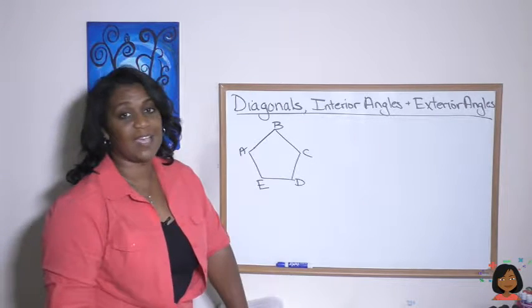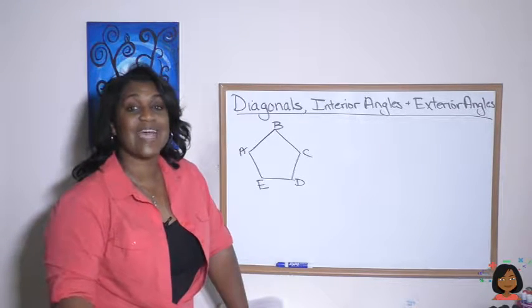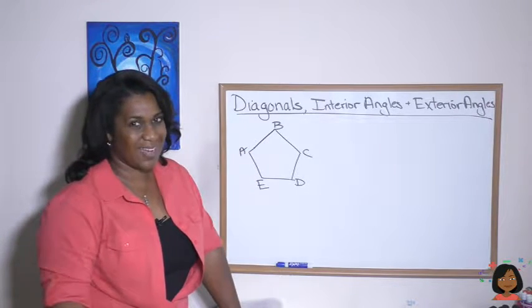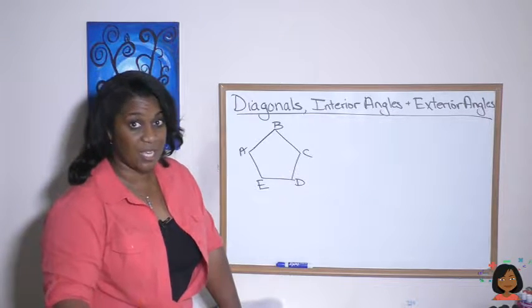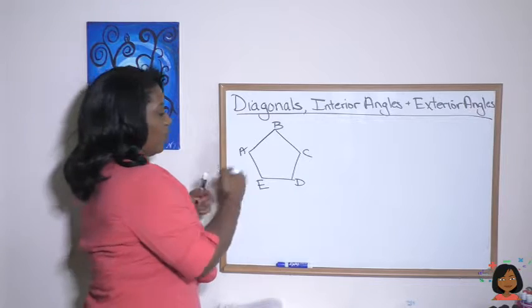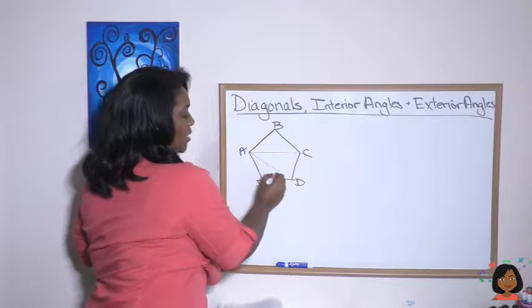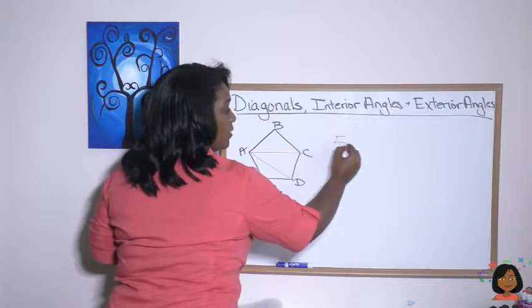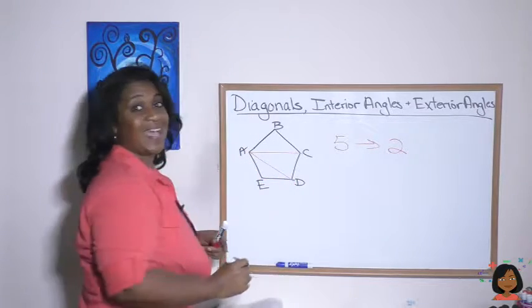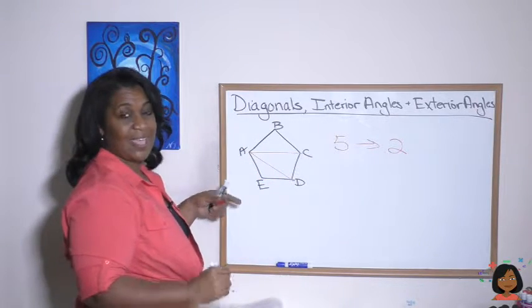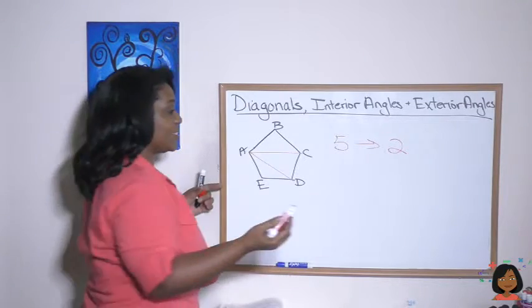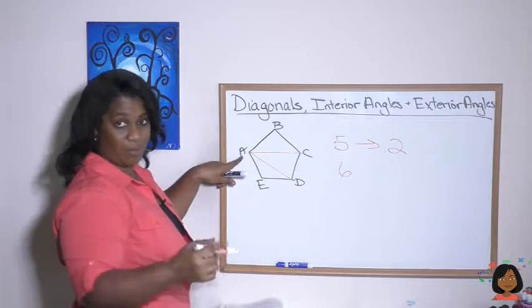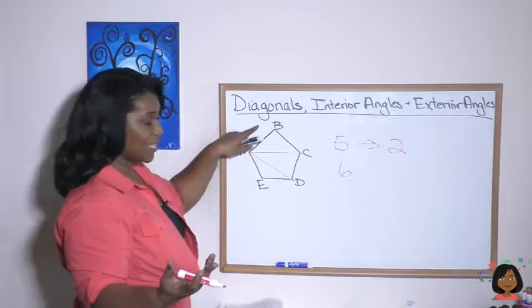Here's another example: we have a pentagon. If I asked how many diagonals can be drawn from point A, remember a diagonal connects non-adjacent vertices. So we couldn't go to B, but we could go to C and to D — that's it. So a pentagon has five sides but only two diagonals from any one point.